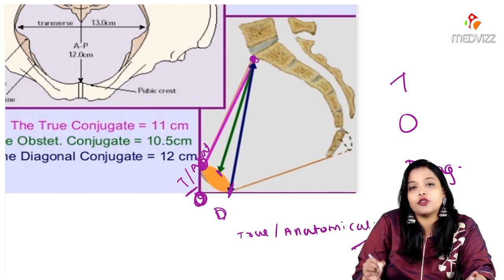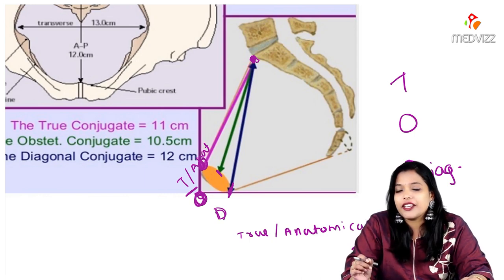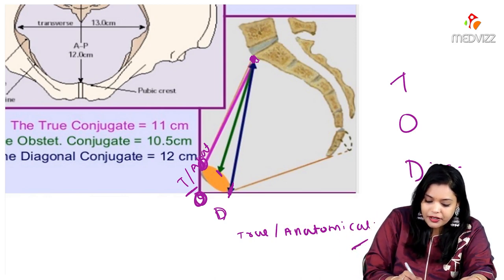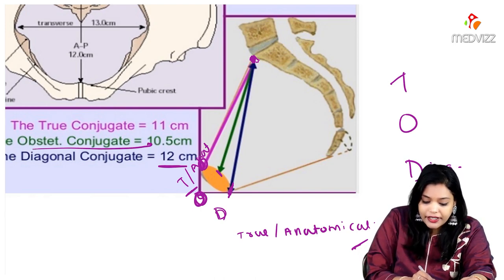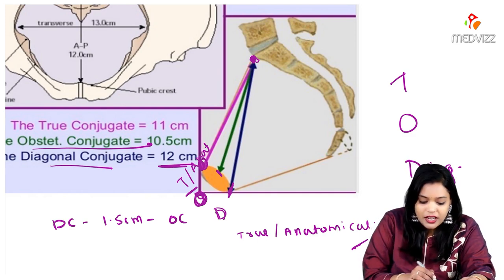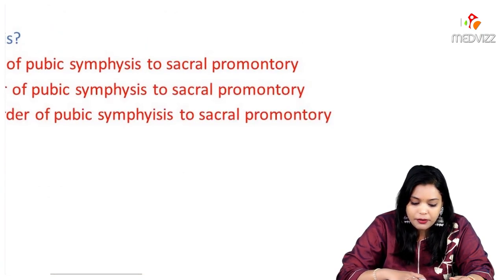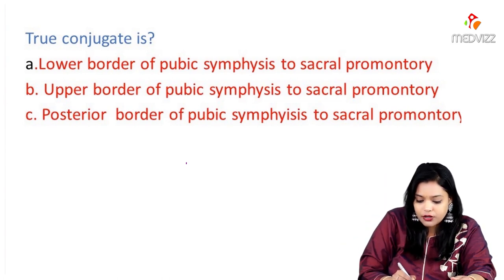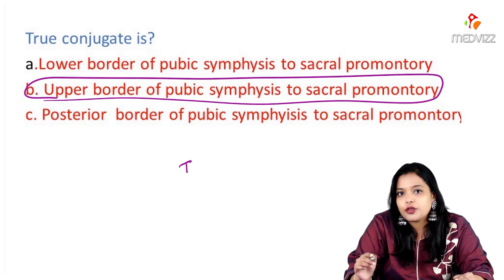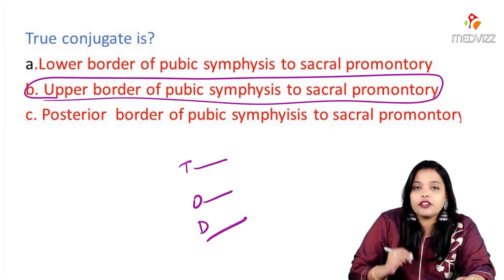Some other common MCQs pertaining to conjugates: the conjugate which is measurable is the diagonal conjugate. Diagonal conjugate minus 1.5 cm gives you the obstetric conjugate. So diagonal conjugate is 12 cm, obstetric conjugate is 10.5 cm, and true conjugate is 11 cm. True conjugate is the top of DOT — upper border of pubic symphysis to sacral promontory.